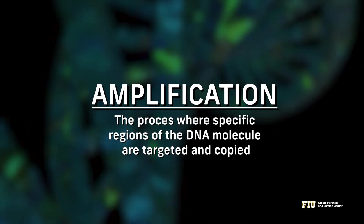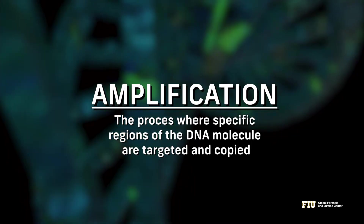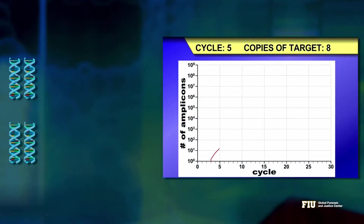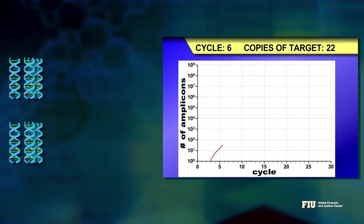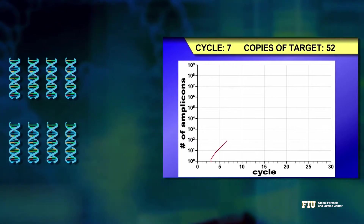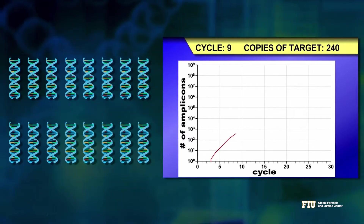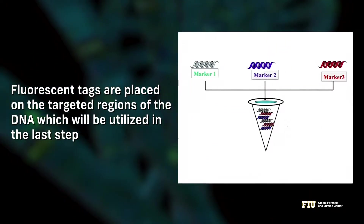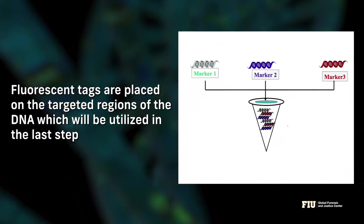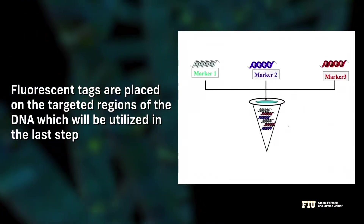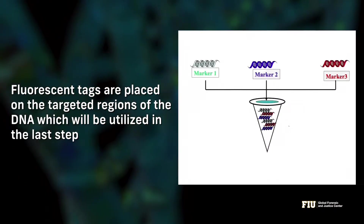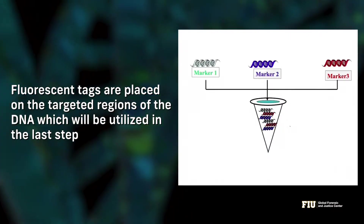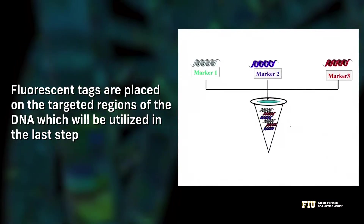After quantitation comes the amplification process, where specific regions of the DNA molecule are targeted and copied. During the amplification process, fluorescent tags are placed on the targeted regions of the DNA, which will be utilized in the last step.